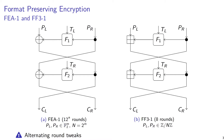One more thing to note is that the functions F1, F2, and so on will for the purposes of this talk be considered to be uniform random functions. These are key-dependent functions; in practice they have a specific construction.